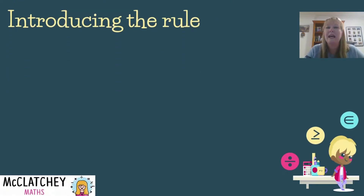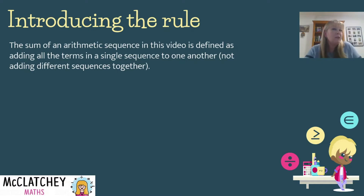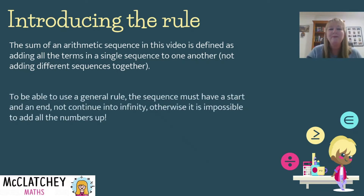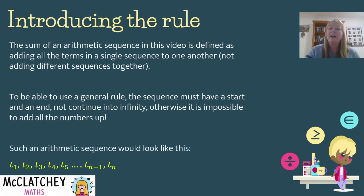The sum of an arithmetic sequence is defined as adding all of the terms up in a single sequence to one another — it's not about adding different sequences together. So if you've got a sequence like 2, 4, 6, 8, 10, we're simply adding 2 + 4 + 6 + 8 + 10. To use the general rule, a sequence must have a start and a finish — that means it's a finite sequence; it doesn't travel on into infinity.